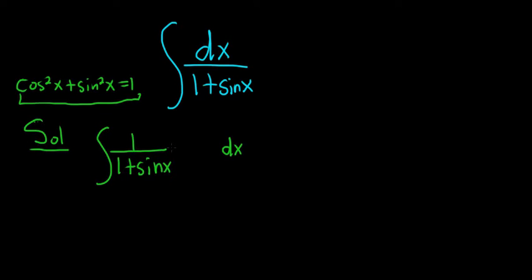We multiply by 1 minus sine x over 1 minus sine x. And what that allows us to do is use the difference of squares formula to try to use this identity up here.